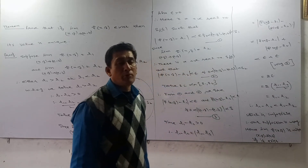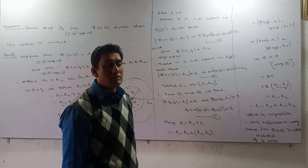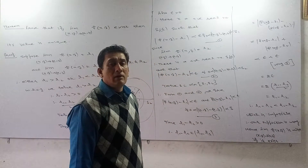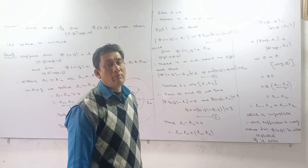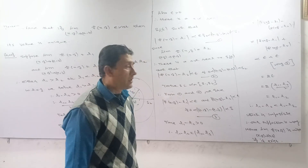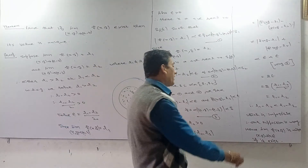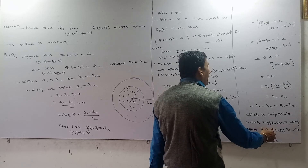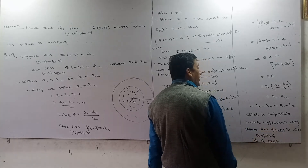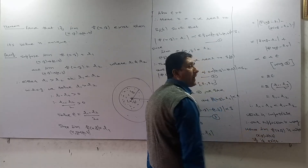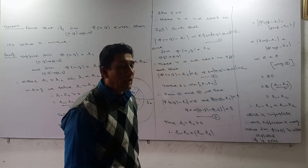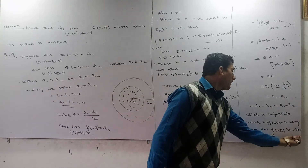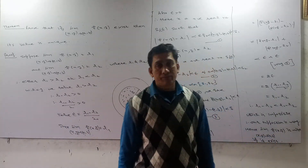Therefore, our supposition is wrong. Hence, if the limit exists, then its value is unique. Hence, if the limit of the function f as (x, y) approaches (a, b) exists, then it is unique.